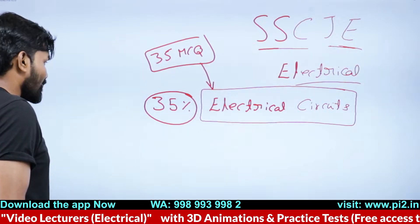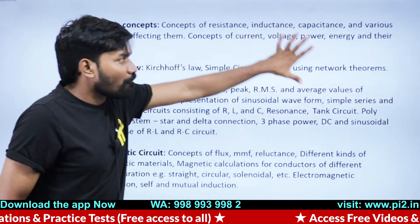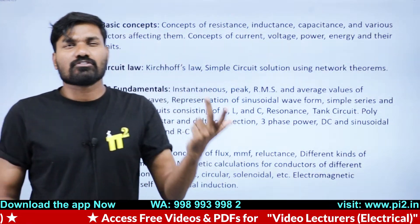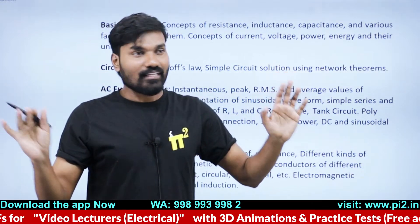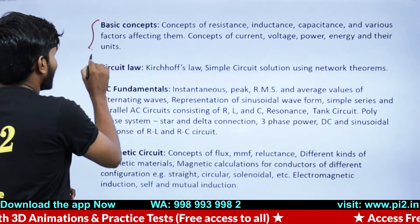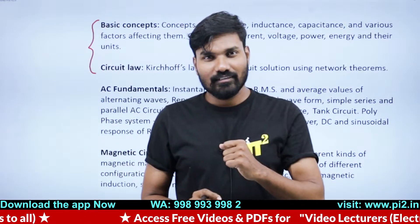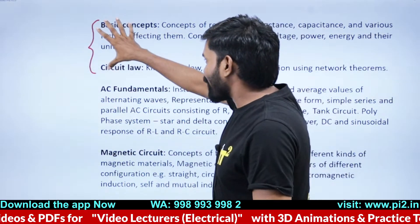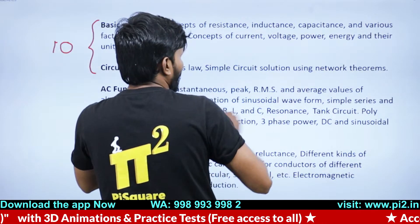Look at the syllabus — it looks bigger but it's a very simple syllabus. No complicated subjects are there. Transients are not really there — maybe one or two questions. Two-port networks are not there at all. The basics: KCL, KVL, voltage division, current division, star-delta, resistance calculation — these are very basic, even a 10th standard student can do it. From these topics alone you will get 10 questions, meaning 10 marks minimum.